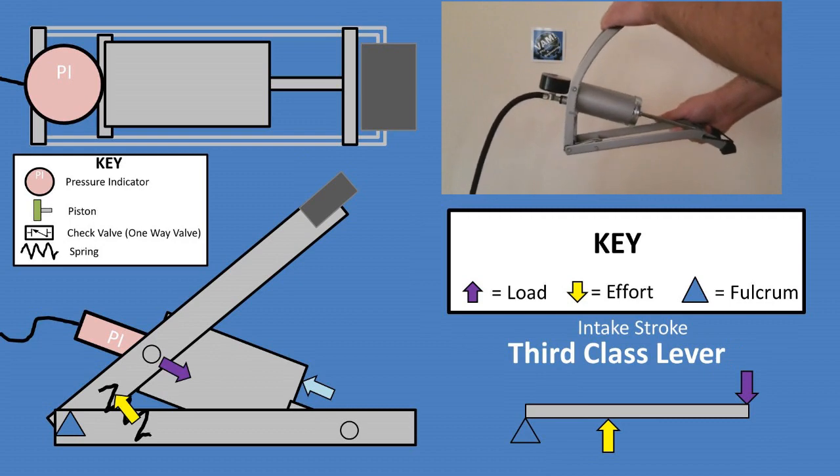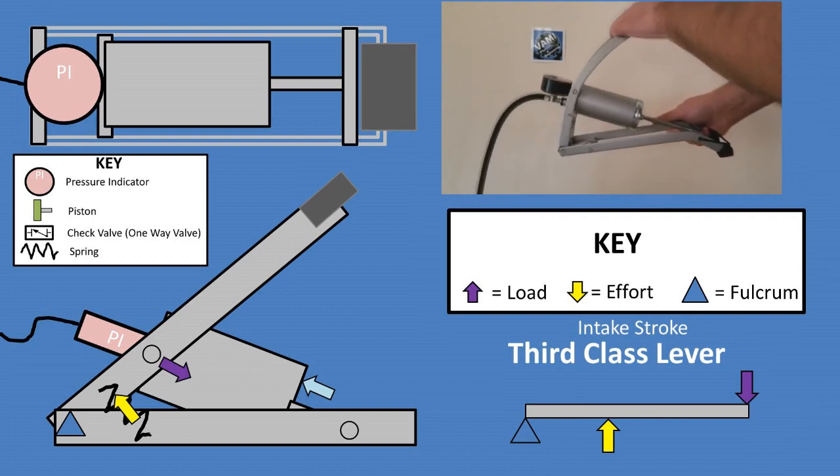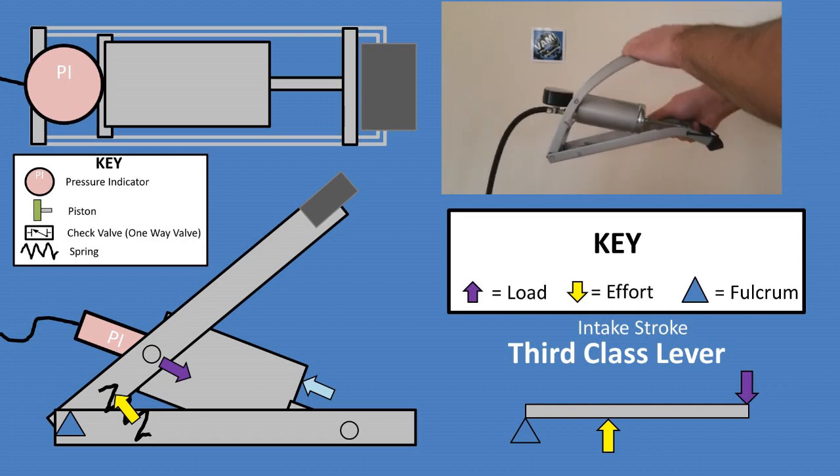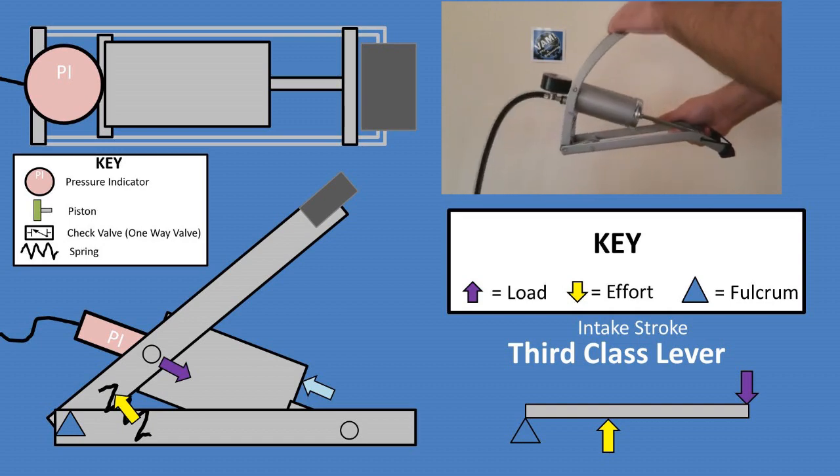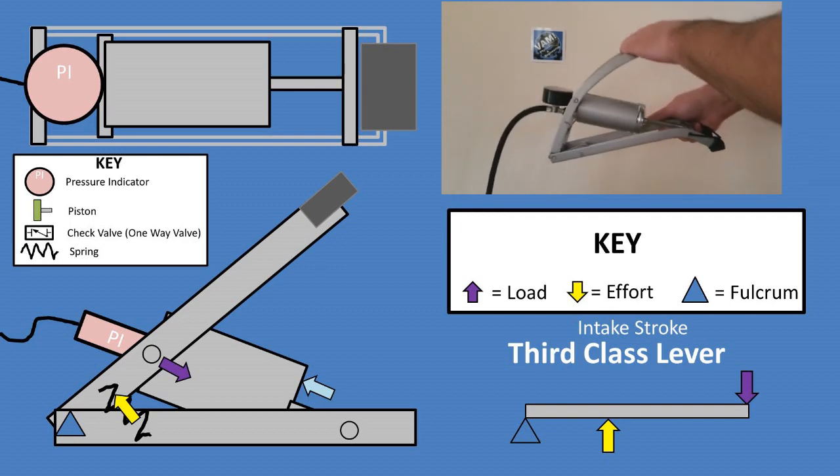On the intake stroke, the class of lever changes to a third class lever. The fulcrum remains at the same location. The effort is now the spring, which changes the potential energy to kinetic energy to raise the lever arm. The load is now the resistance from the piston intaking the air.